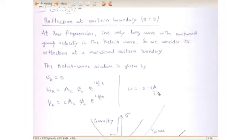What happens when you have eastern boundaries and western boundaries, which are present in all basins? We first start with the eastern boundary, so we put x equal to 0 at the boundary. At low frequencies, the only long wave with eastward group velocity is the Kelvin wave. We consider its reflection at a meridional eastern boundary — a north-south coast on the eastern side of the basin. Equivalents would be the coast of the Americas in the Pacific, the coast of Sumatra in the Indian Ocean, and the coast of West Africa in the Atlantic.